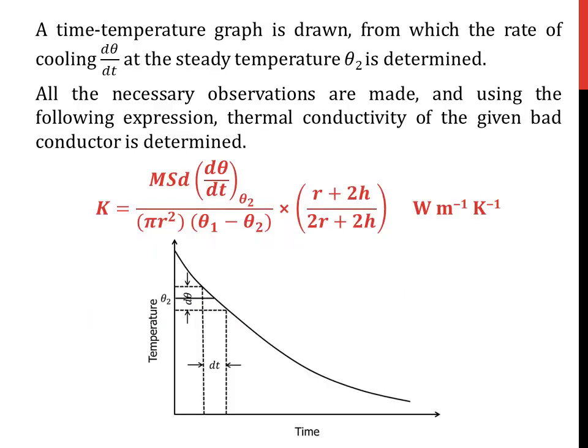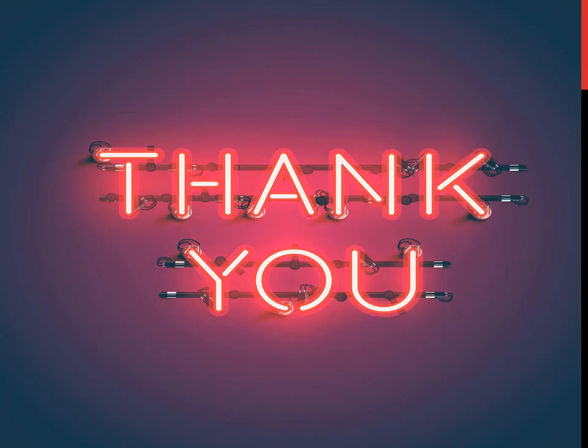The term dθ/dt at θ2 is unknown in expression 7. Therefore, in order to find it, we proceed with drawing the time-temperature graph. Using this graph, we obtain a cooling curve and determine dθ/dt at θ2. This value is then substituted in equation 7 to obtain the final value of the thermal conductivity of the bad conductor or poor conductor of heat. Thank you for your patient listening. Hope you understood this topic.